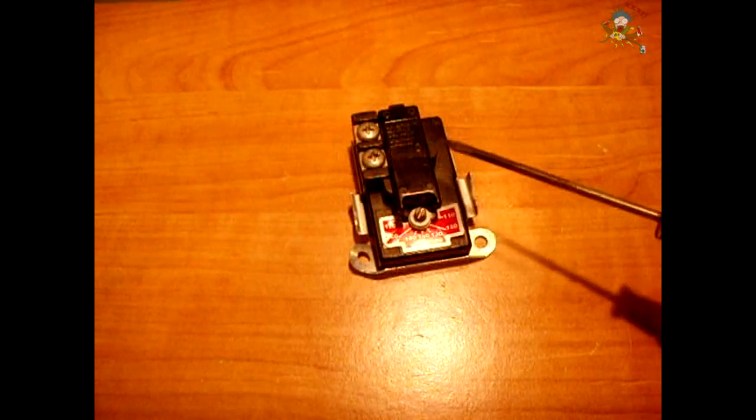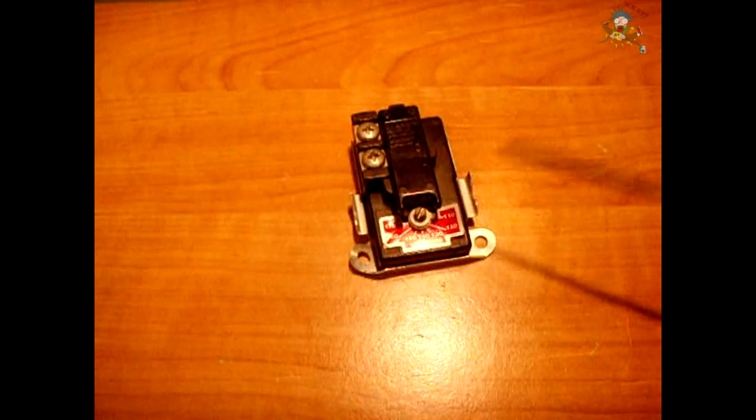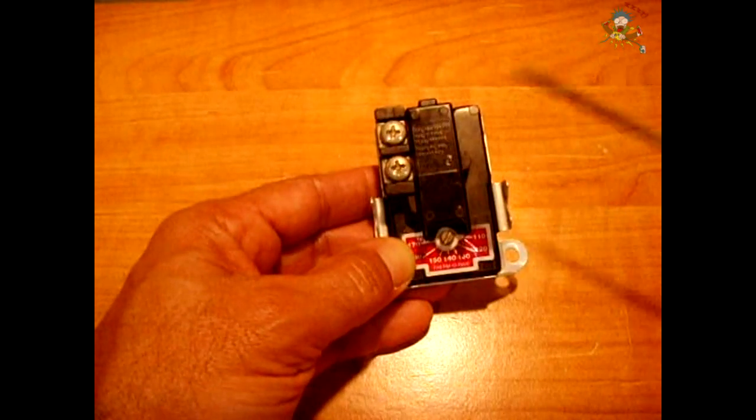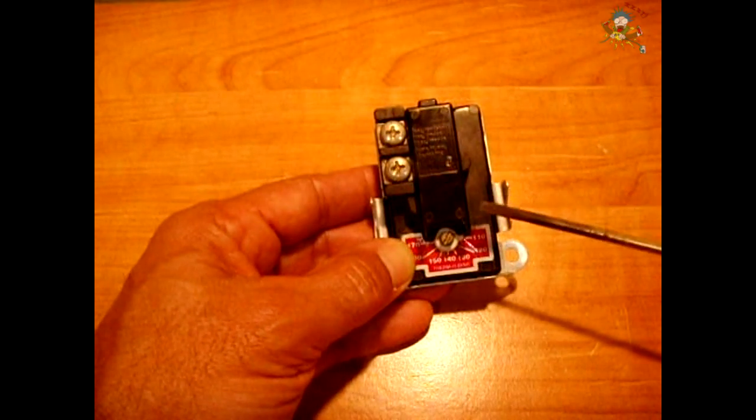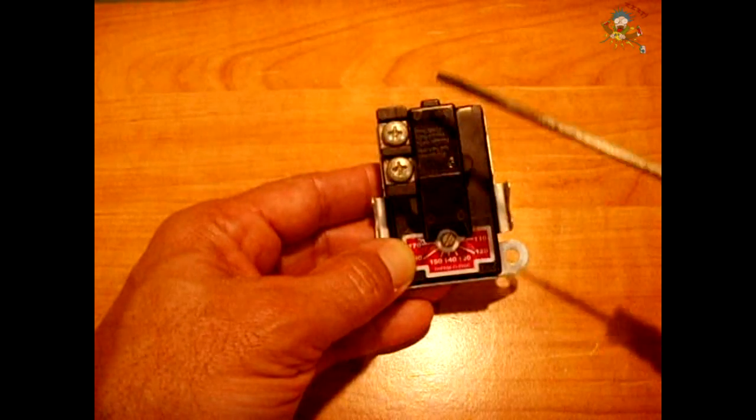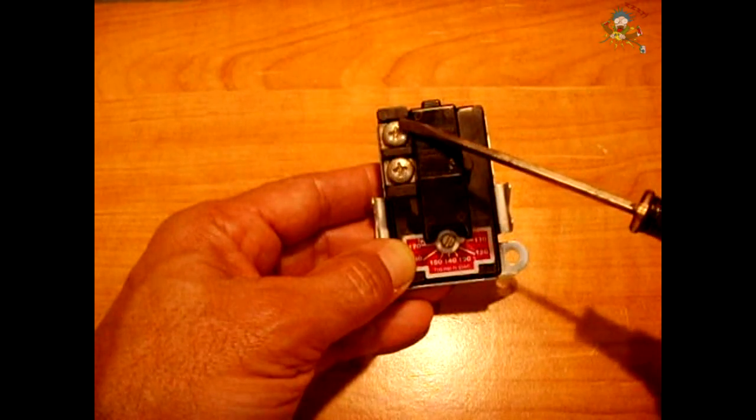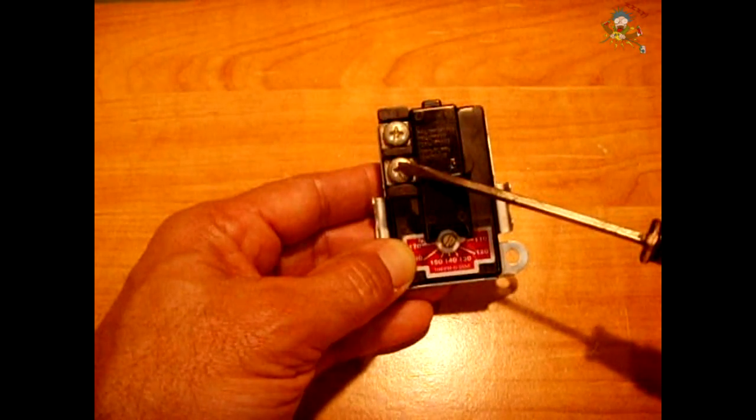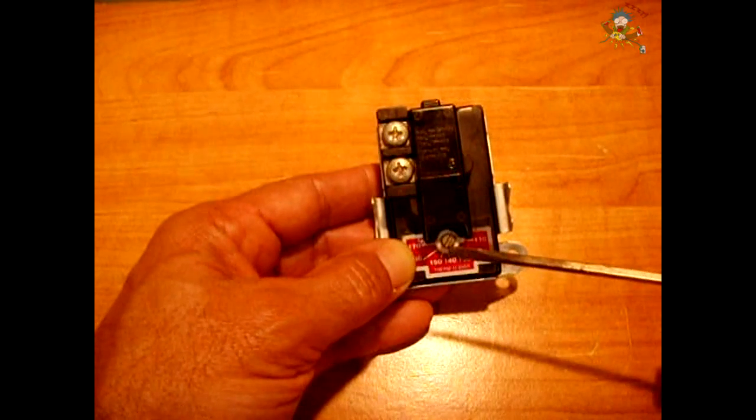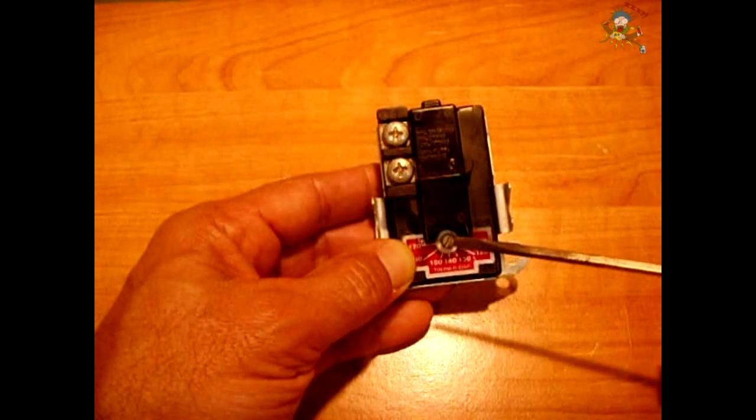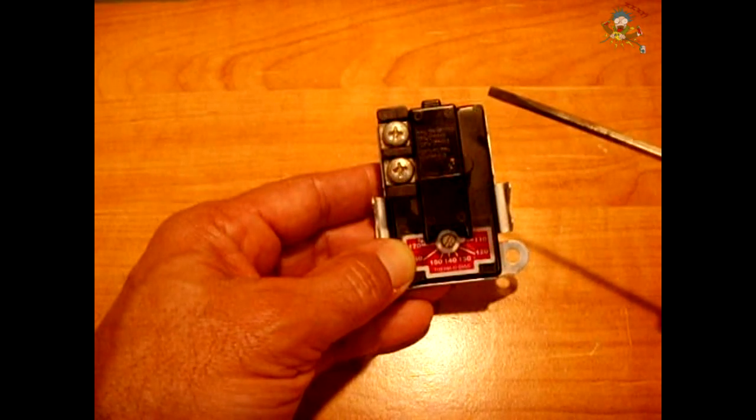Now as you can see here, this thermostat is a lower thermostat. There's only two connections. The power wire would flow into one screw, and then from the other screw would go into the heating element. And then the other screw on the heating element would complete the circuit with the other 120 volt leg.